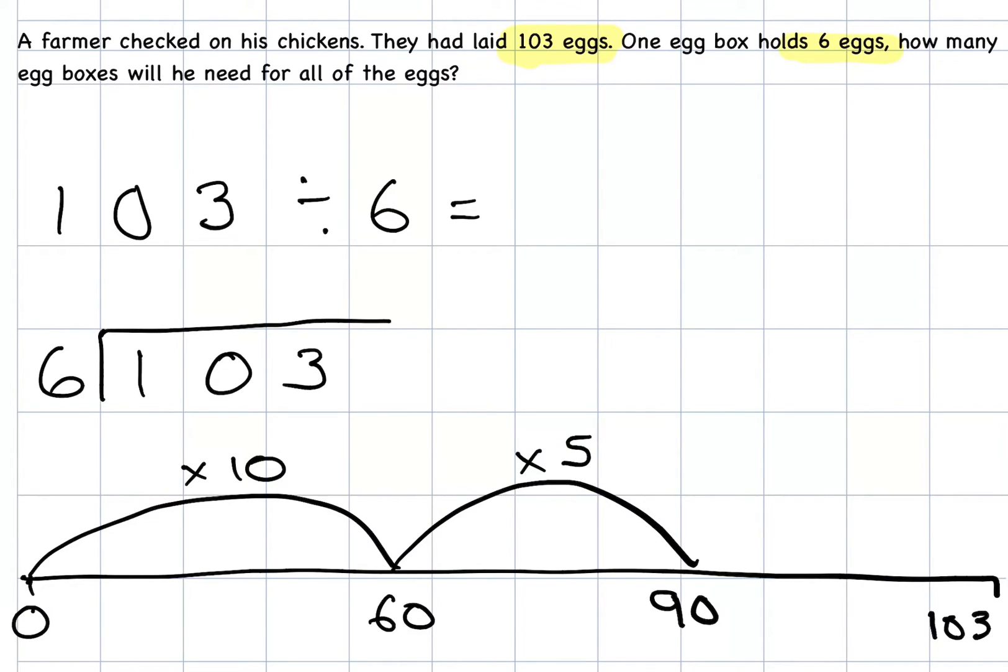Now, I can't do another 5 jumps of 6 because that would be too many. So, I'm just going to go back to doing jumps of 1. So, if I do one jump of 6, that will get me to 96. Still could do another jump of 6. I'm going to do another one jump of 6. And that would get me to 96 add 6 would get me to 102. Right, well, I'm not going to be able to do another jump of 6. So, let's count up how many jumps I've done. 10 jumps here plus 5 jumps is 15. 16, 17. So, I've done 17 jumps.